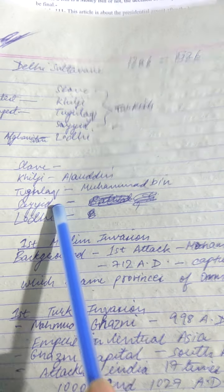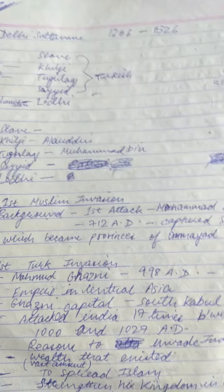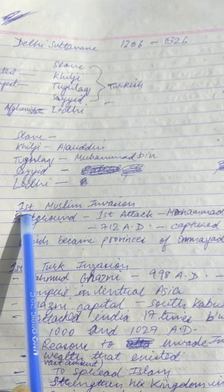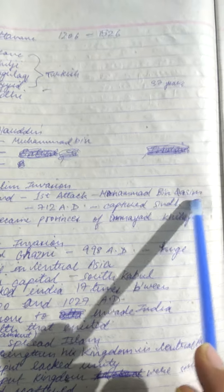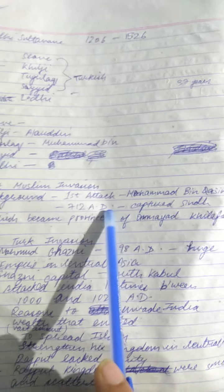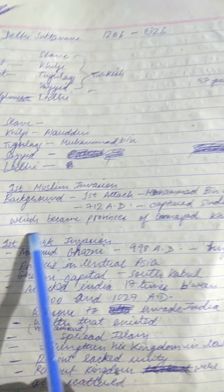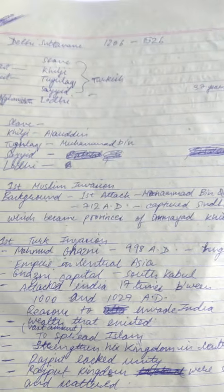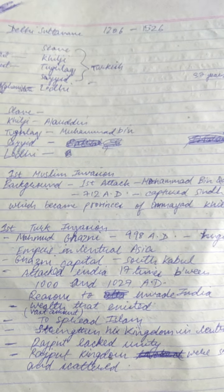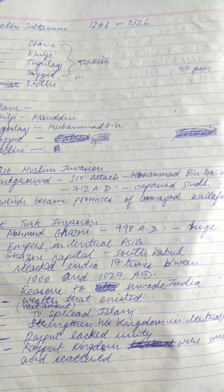Now we will start from the first Muslim invasion. The first attack was by Muhammad bin Qasim in 711 AD. He captured Sindh, which became a province of the Umayyad Khilafat.